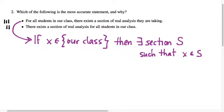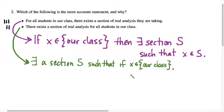If I do the same thing for the second, then the words just appear in a slightly different order. There exists a section of real analysis, S, such that if x is an element of our class, so if x is one of you, then x belongs to S. Does it help to write these in if-then format for you to see the difference, or do you maybe want to revise your opinion of which one you chose based on unpacking the logical structure a little more?